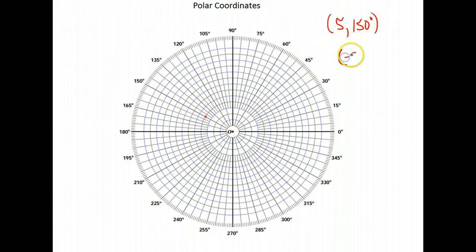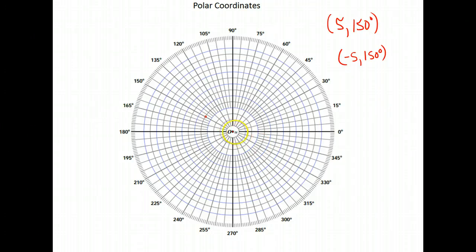If there's a negative number, like if I were doing (-5, 150°), that means I'm still open to the 150 degree angle. But on that line — notice how it goes all the way through — from the pole I go negative 5, so I go the opposite direction: 1, 2, 3, 4, 5. You can see the difference between having a positive and a negative: you stay on that same line but go either towards your angle or away from it.